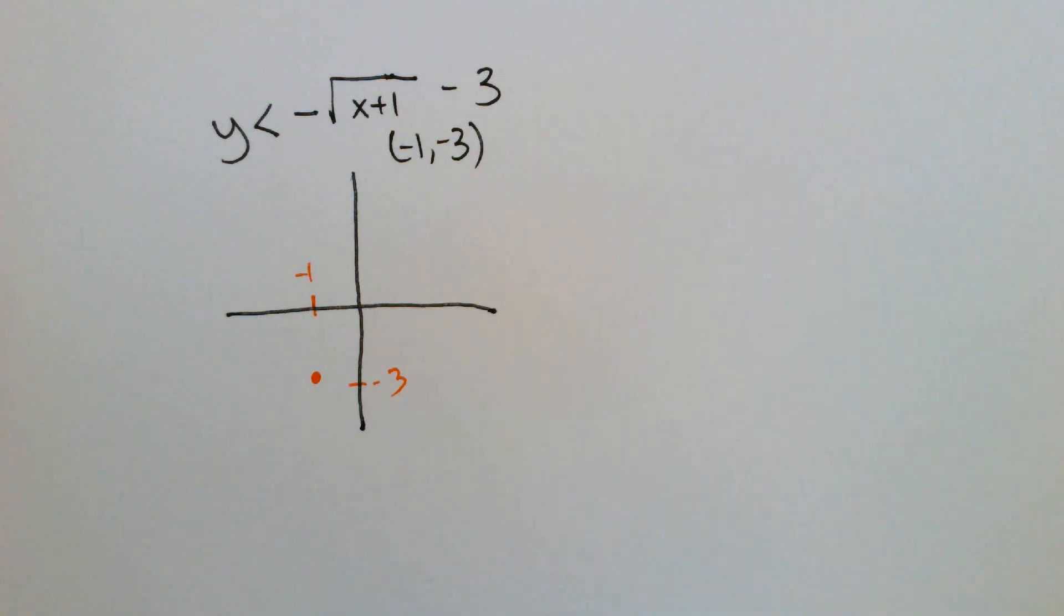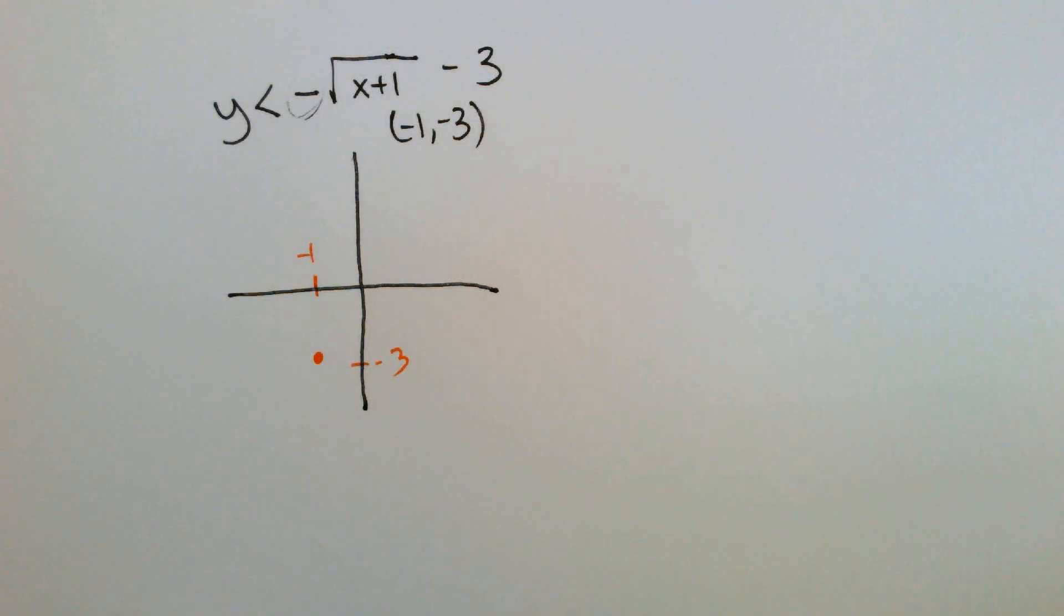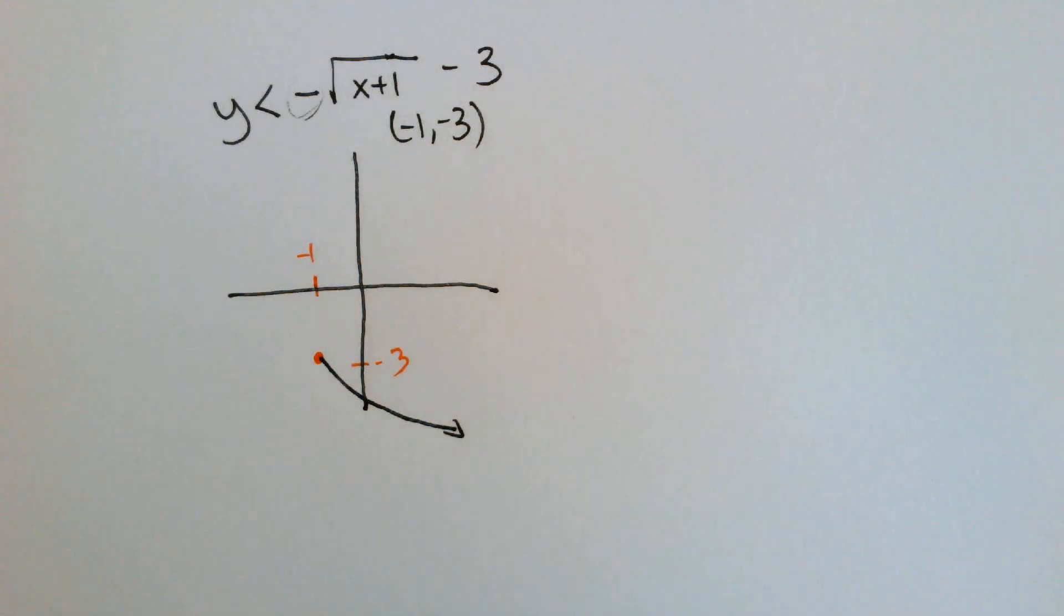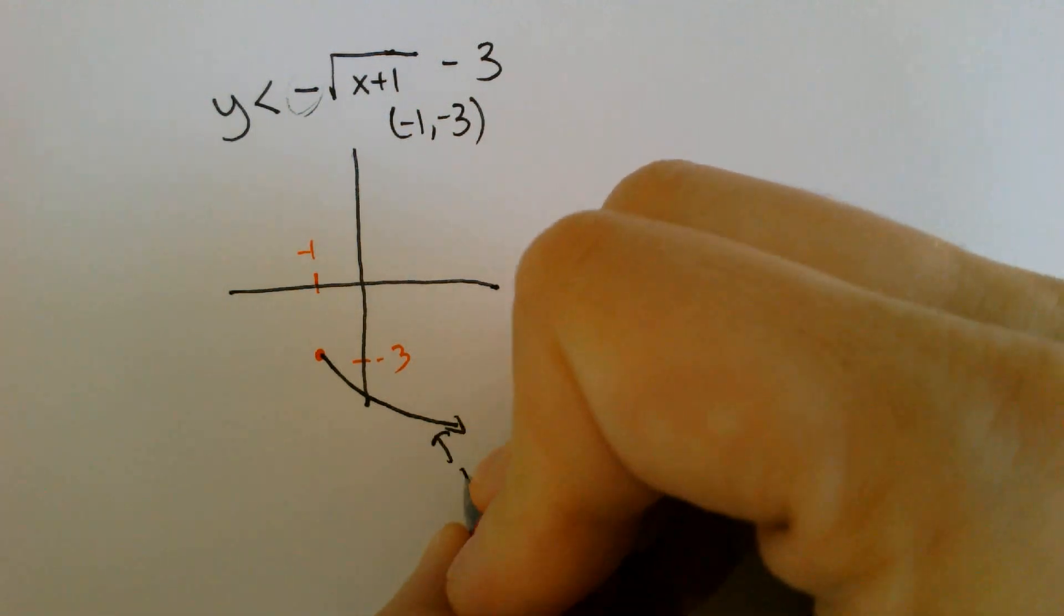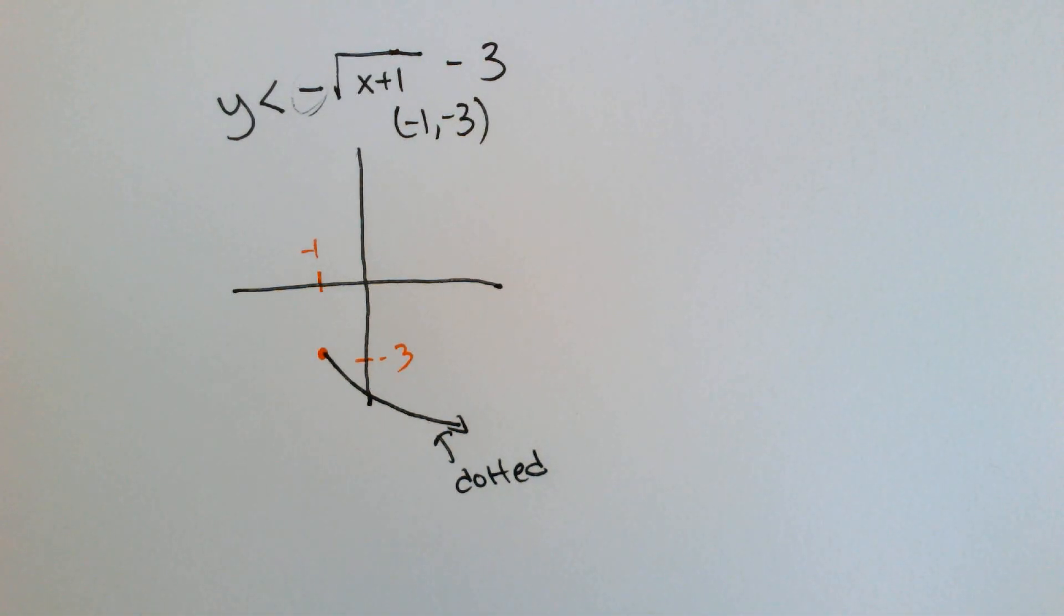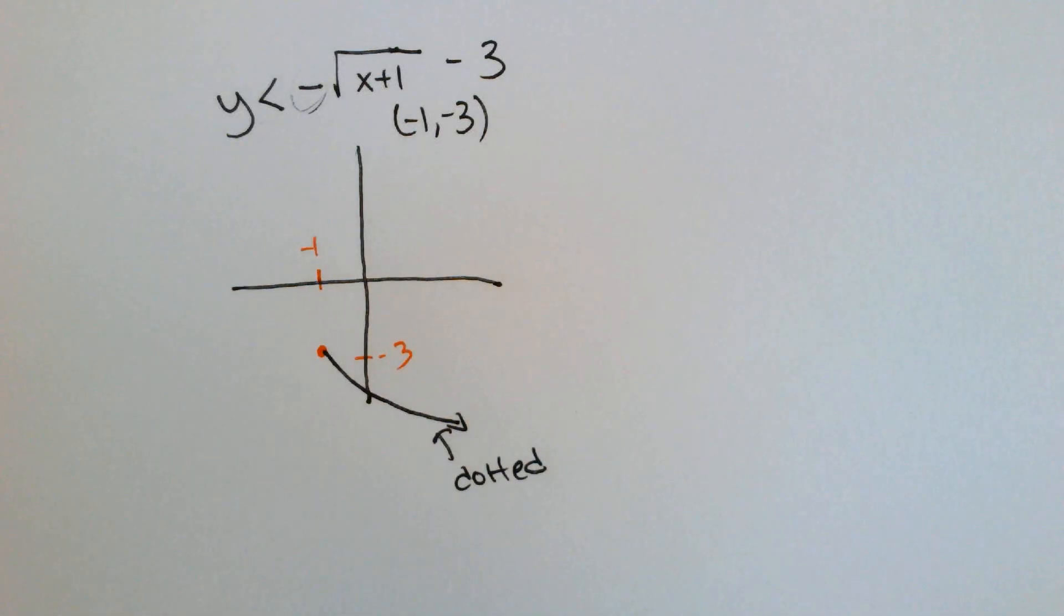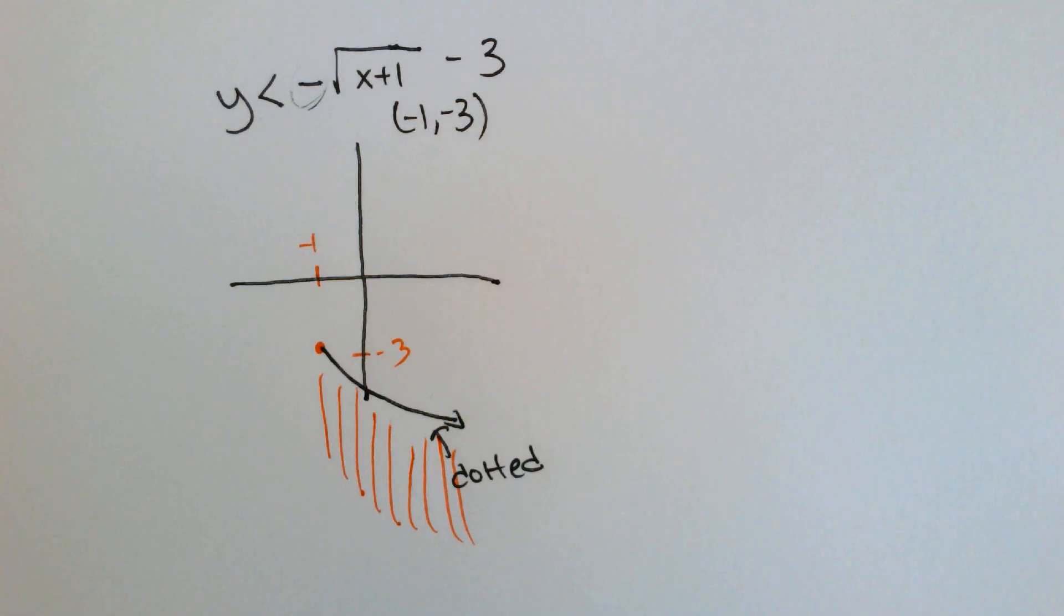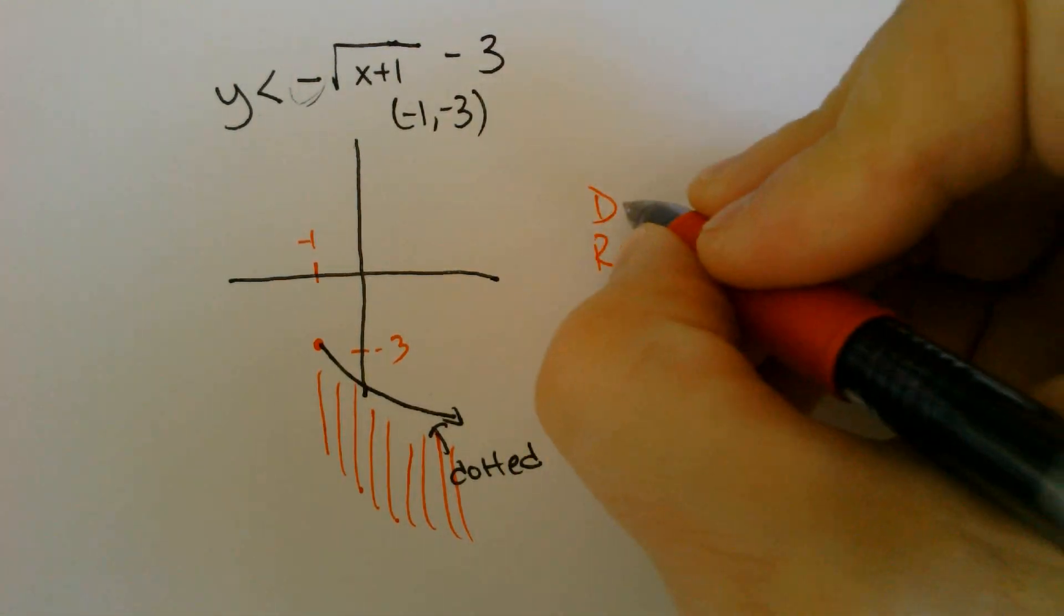This graph is going to go down because the negative symbol in front, and it should be dotted. If you ever make that mistake and you're writing in pen, you either start over or you write dotted. It should be dotted because it doesn't have the equal to symbol underneath. Which way should we shade? If it's less than, we should be shading down, and we have to ask ourselves now, what is the domain and what is the range?